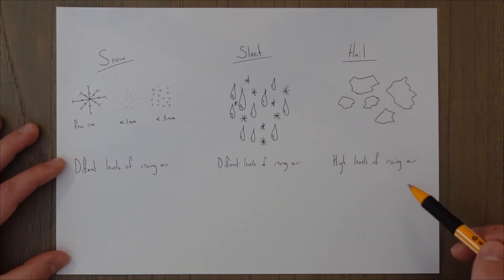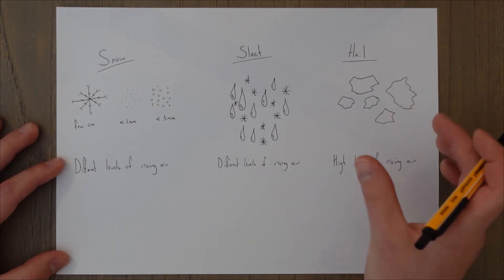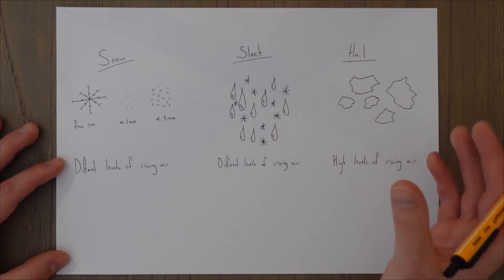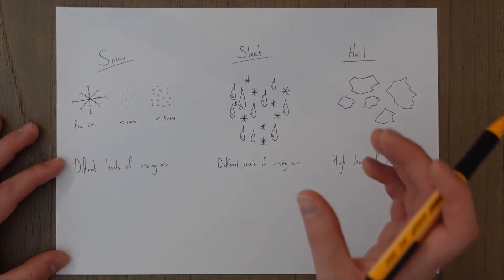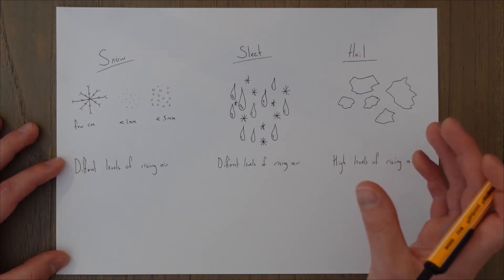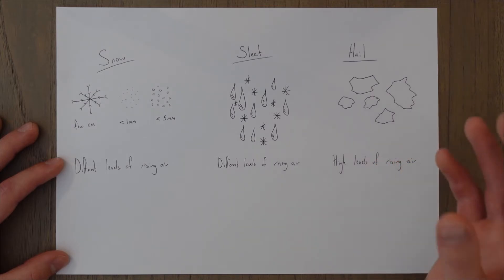This requires a lot of rising air, very high levels of rising air, very unstable conditions, very cumuliform clouds. Hail can grow huge, there's loads of photos online of massive hail drops that are the size of tennis balls and even larger than that so hail is pretty serious precipitation because it can get so large.